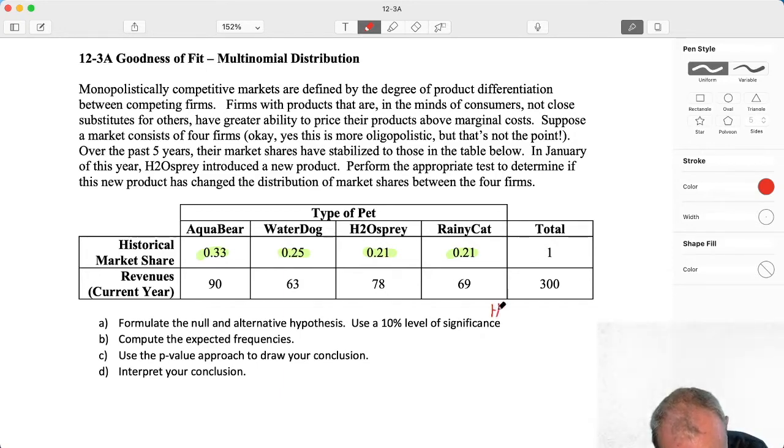Our null hypothesis, if I can squeeze it in here, is that those proportions, so the probability for Aquabear is 0.33, the probability for Waterdog is 0.25. I'm saying probability, that's not right. The proportion for Waterdog, or the market share is 0.25, for H2O Spray is 0.21, and for Rainy Cat is also 0.21. So the null hypothesis here is saying that multinomial distribution has not changed.